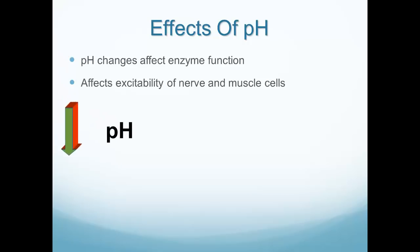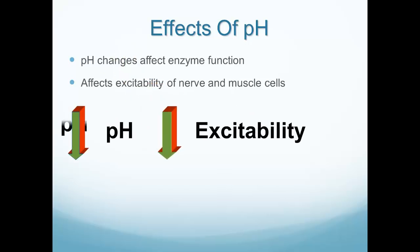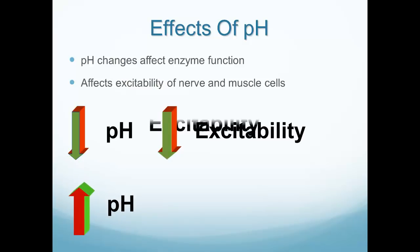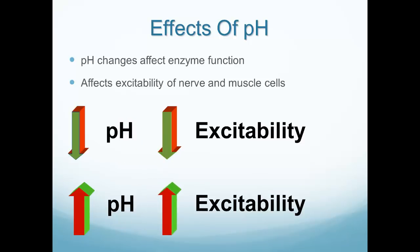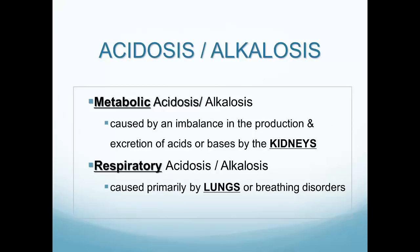pH changes affect enzyme function in the body and the excitability of nerves and muscle cells. A decrease in pH leads to decreased excitability of nerve and muscle cells; an increase in pH leads to increased excitability. Either situation is dangerous for cardiac muscle. If pH is too low, decreased excitability means the heart won't contract properly. If pH is high and we have alkalosis, the heart becomes too excitable and can go into a very fast rhythm, leading to poor cardiac output or even cardiac arrest.